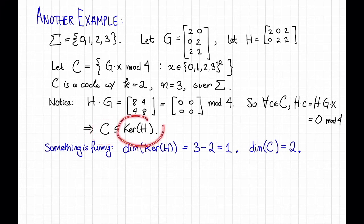On the other hand, the dimension of C should be equal to 2. That's because C is the column span of this matrix G, and these two columns also sure look like they're linearly independent, so it should have rank 2.